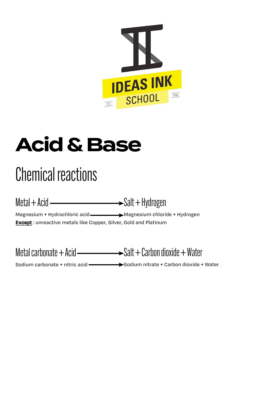When a metal carbonate reacts with an acid, a salt, carbon dioxide gas, and water are produced. For instance, sodium carbonate reacts with nitric acid to produce sodium nitrate, carbon dioxide gas, and water.